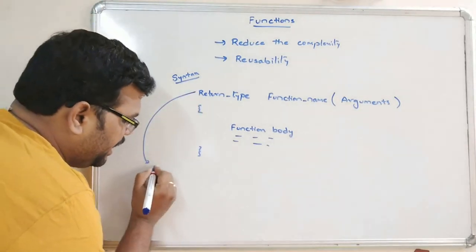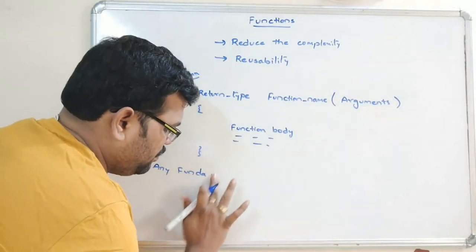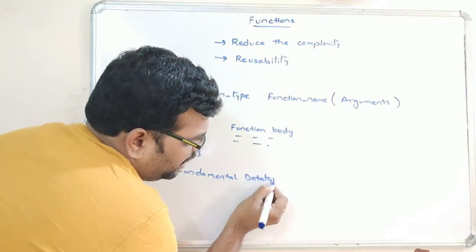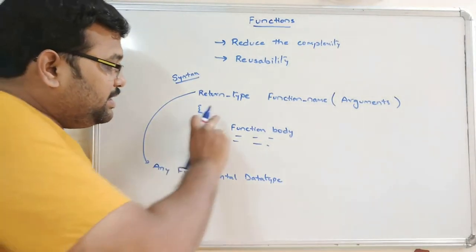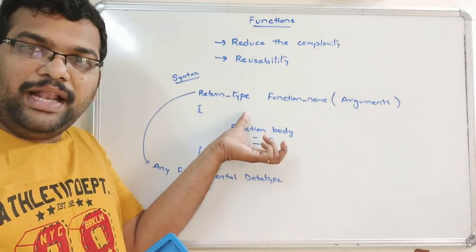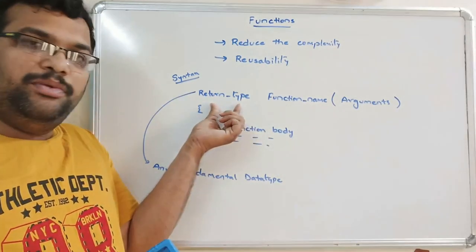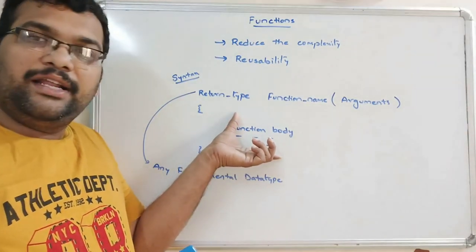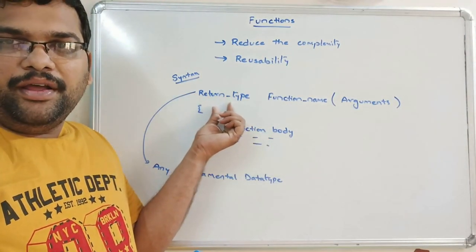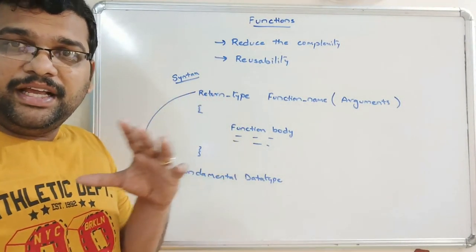Coming to the return type, it is any fundamental data type. If the function returns an integer value, the return type should be int. If the function returns a float value, it should be float. If the function returns a character value, it should be char. And if the function doesn't return anything, it should be void. But there must always be a return type.